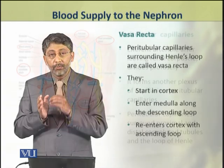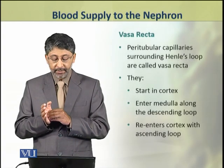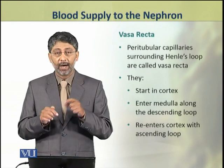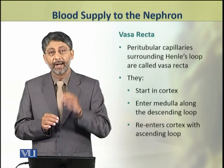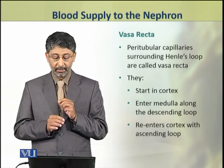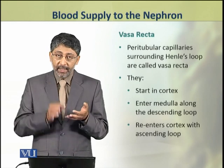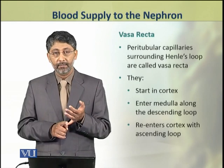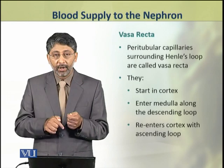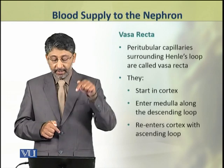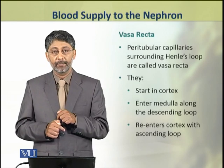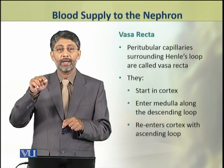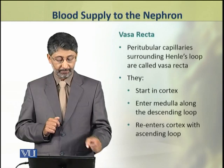The peritubular capillaries which surround the loop of Henle are termed vasa recta. The vasa recta start in the cortex, then enter the medulla along the descending loop of Henle, and re-enter the cortex with the ascending loop of Henle.